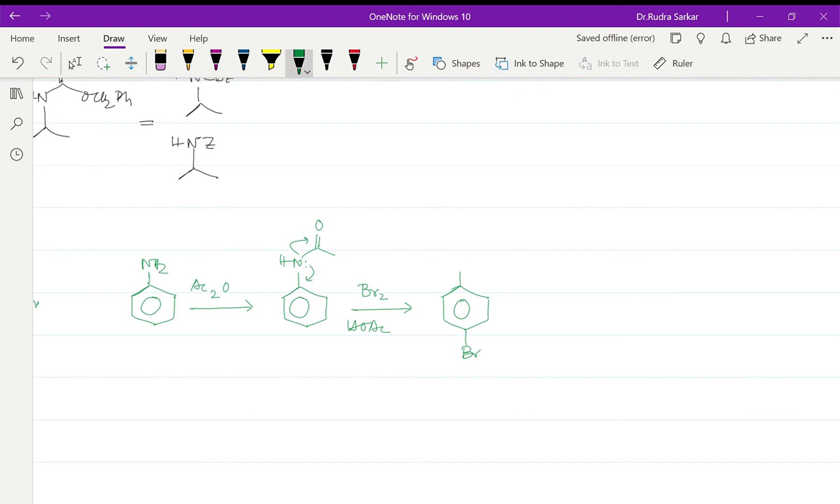So if you use acetic acid and bromine, then only substitution reaction takes place in the para position. Nothing happens in the ortho position because of steric hindrance. Subsequently, if you want to deprotect it, you treat it with concentrated HCl in presence of ethanol, and only para-bromoaniline will be produced because of the weak moderating ortho-para ability of the amine group.